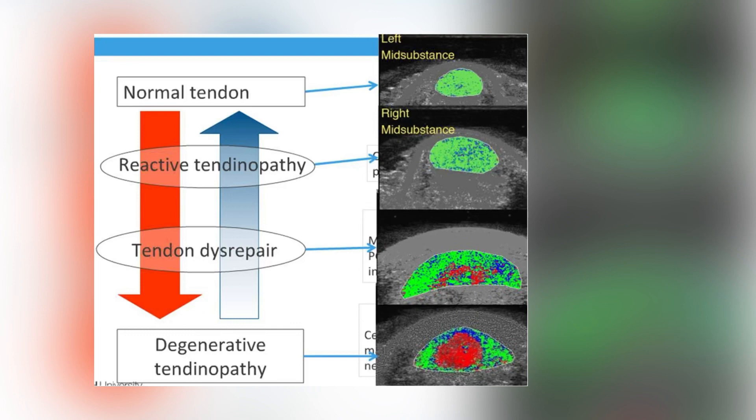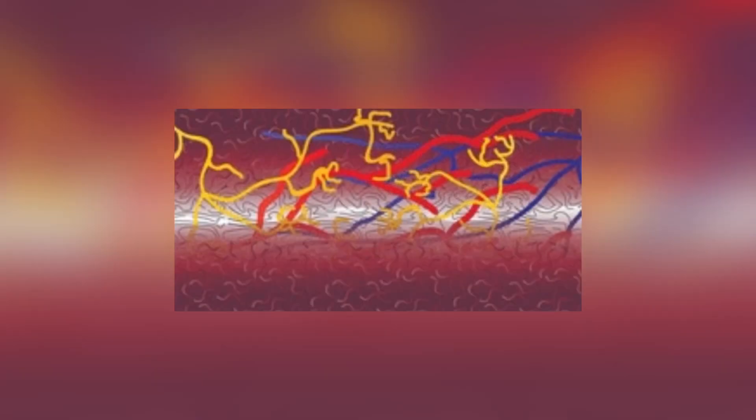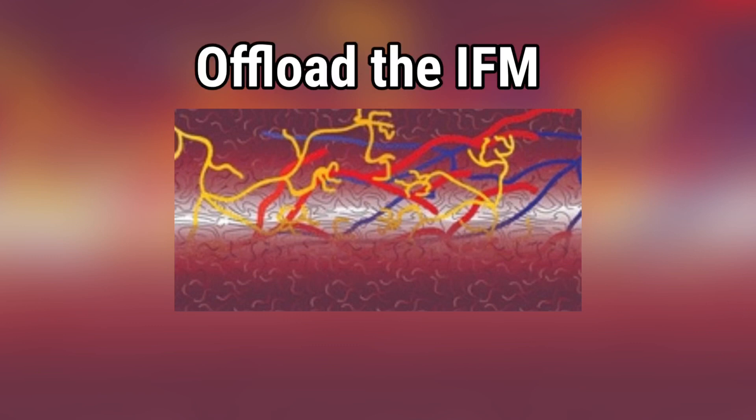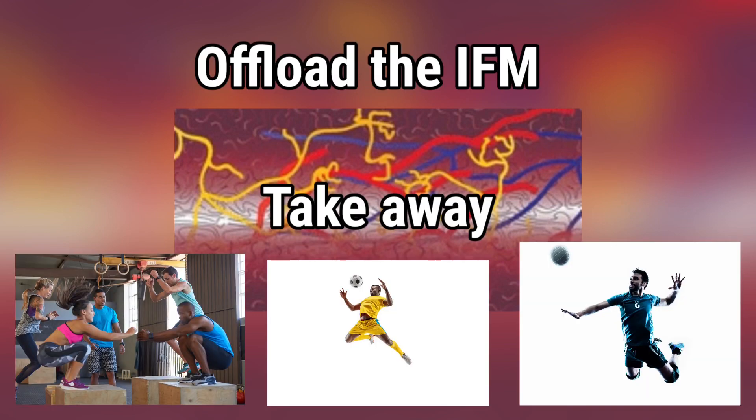So practically, what can you do with this? If you have a degenerative or a reactive tendon, you're probably going to have an IFM that is overloaded. How do you offload the IFM? You take away the energy storage activities. If it's the patellar tendon - jumping, landing, cutting, accelerating, decelerating - take those away if they're causing pain, because they're probably causing overload on the IFM, which is already overloaded.